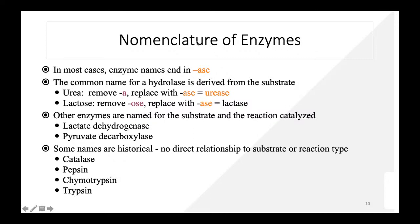Regarding nomenclature, in most cases an enzyme's name ends with '-ase'. The common name for a hydrolase is derived from the substrate — for example, urea becomes urease, and lactose becomes lactase. Other enzymes are named for the substrate and reaction type, like lactate dehydrogenase or pyruvate decarboxylase. Some do not relate to substrates or reaction type, such as catalase, pepsin, chymotrypsin, and trypsin.